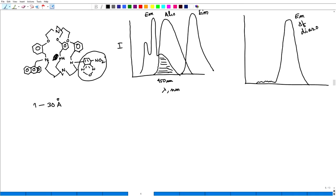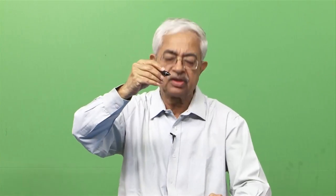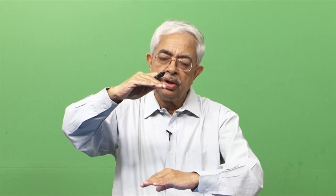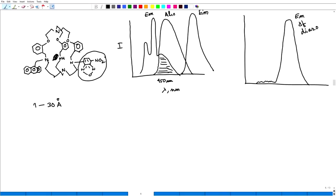If they are matching, then only there will be complete transfer of energy to the diazo. Diazo gets the energy from anthracene. Anthracene was excited, it emits, comes down, and energy is given to diazo. Diazo is excited because it has got all the energy from anthracene. When diazo comes down, it gives the emission spectra of the diazo. So I will not see anthracene emission at all — it will be like a background — but diazo compound will show a strong emission peak.